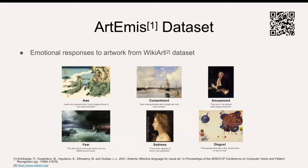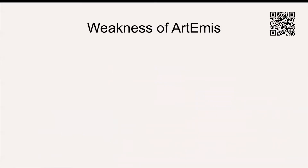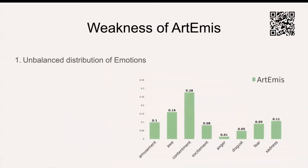The Artemis dataset collected emotional responses to artwork from the WikiArt dataset. Every painting has an emotion label as well as a caption to explain why this painting evokes such an emotion. Artemis was a significant step in that direction. However, it had its fair share of weaknesses. Artemis has a bias towards positive emotions, where most paintings are annotated positively, limiting the emotional experiences represented in the dataset.